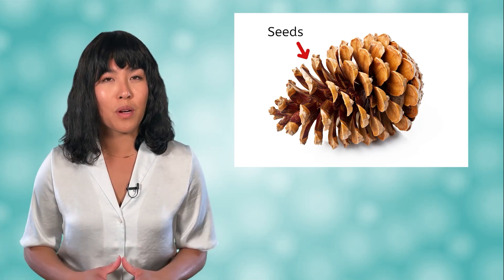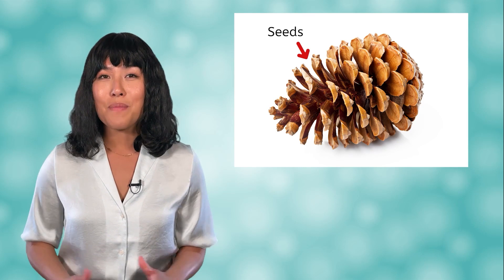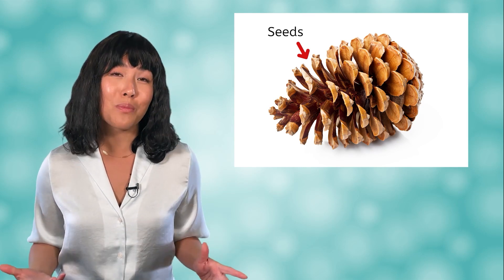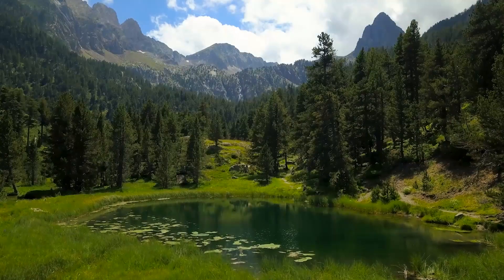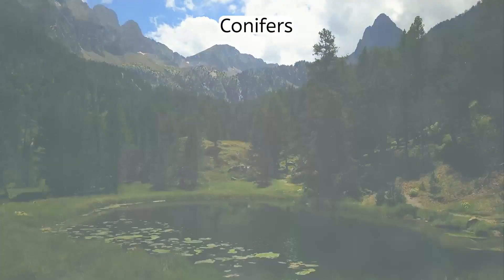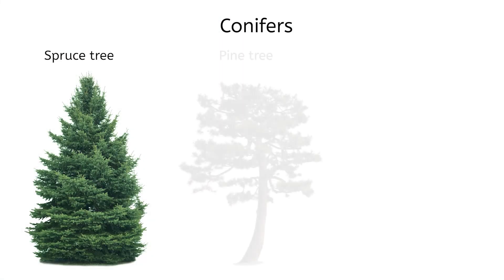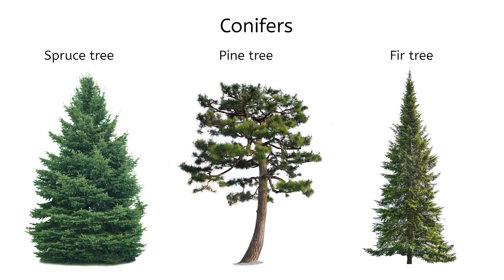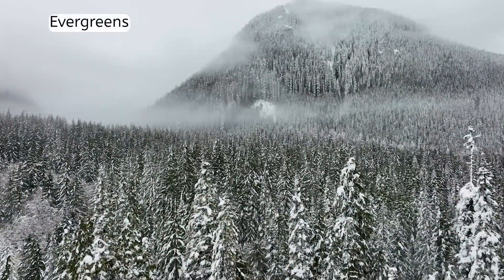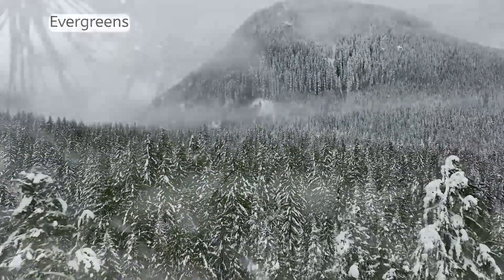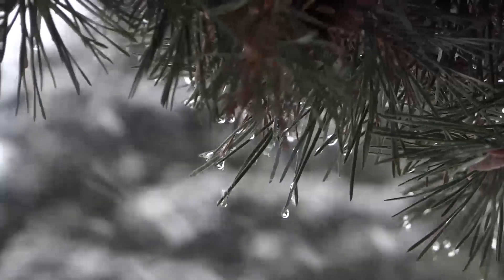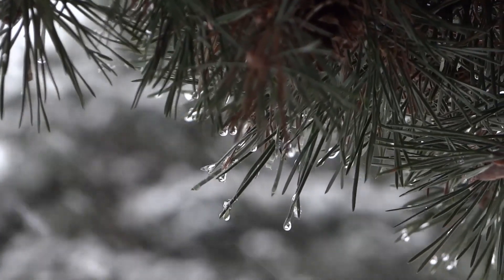The word gymnosperm translates to naked seed, because the seeds are very accessible and unprotected in the cone. The most common class of gymnosperms are the conifers, such as spruce trees, all the species of pine trees, and fir trees. Most have long, thin leaves or needles that are adapted to cool, dry conditions. Most are also evergreens, meaning they can do photosynthesis all year and do not lose their leaves in the winter. In fact, the needles on some pine trees can last for up to 10 years before being replaced.